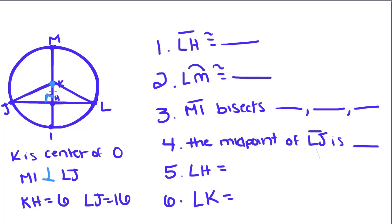KH right here is equal to 6. And LJ, this entire thing is equal to 16. First, we want to know what LH is congruent to. LH is this piece right here. It's congruent to JH right here. Because when MI intersects JL, it not only forms a right angle, it cuts JL into two equal pieces.